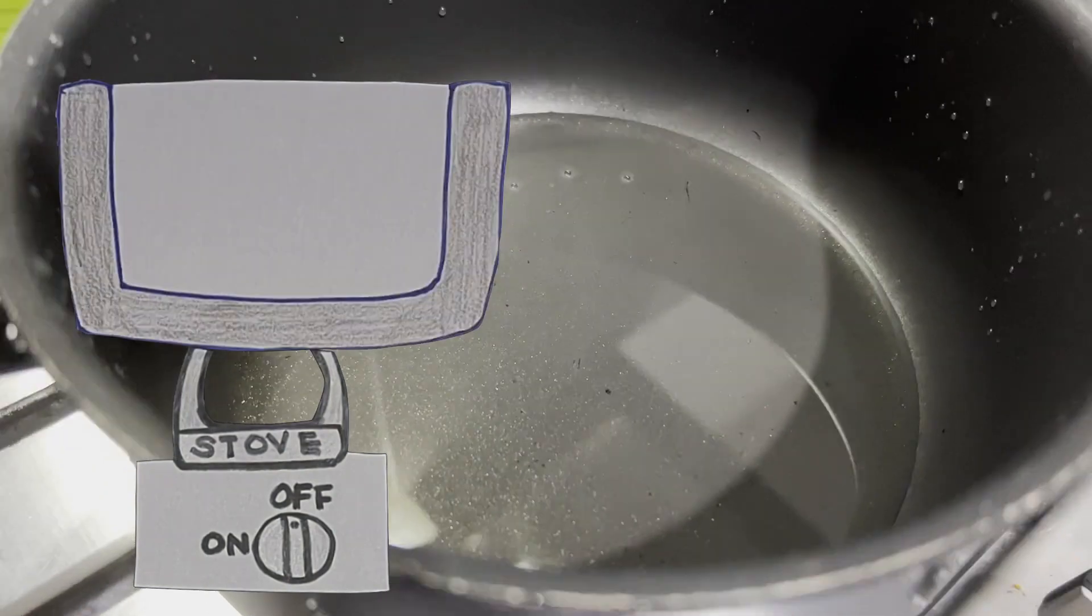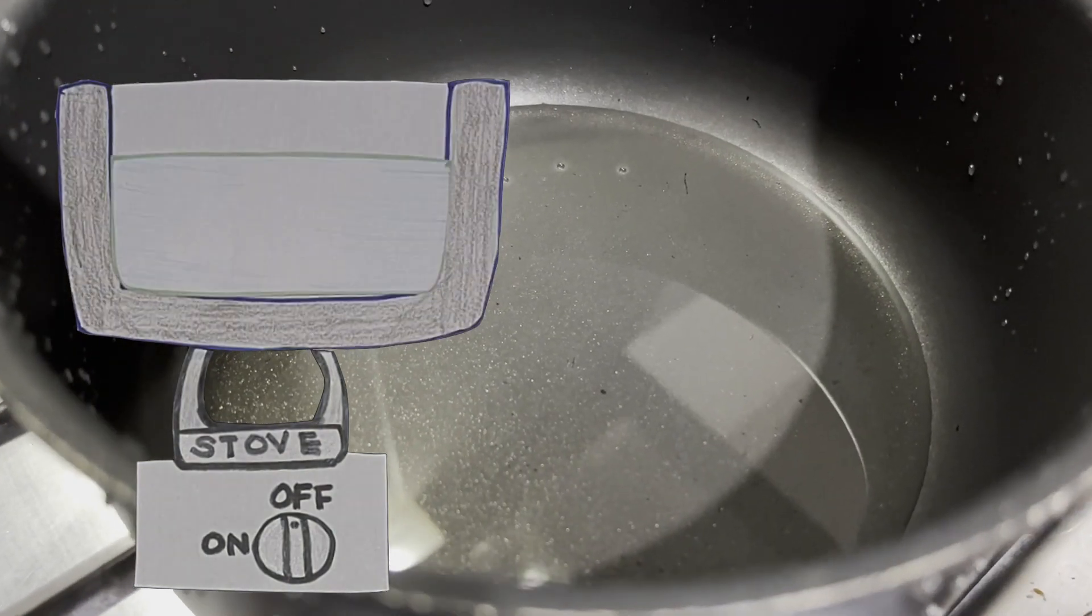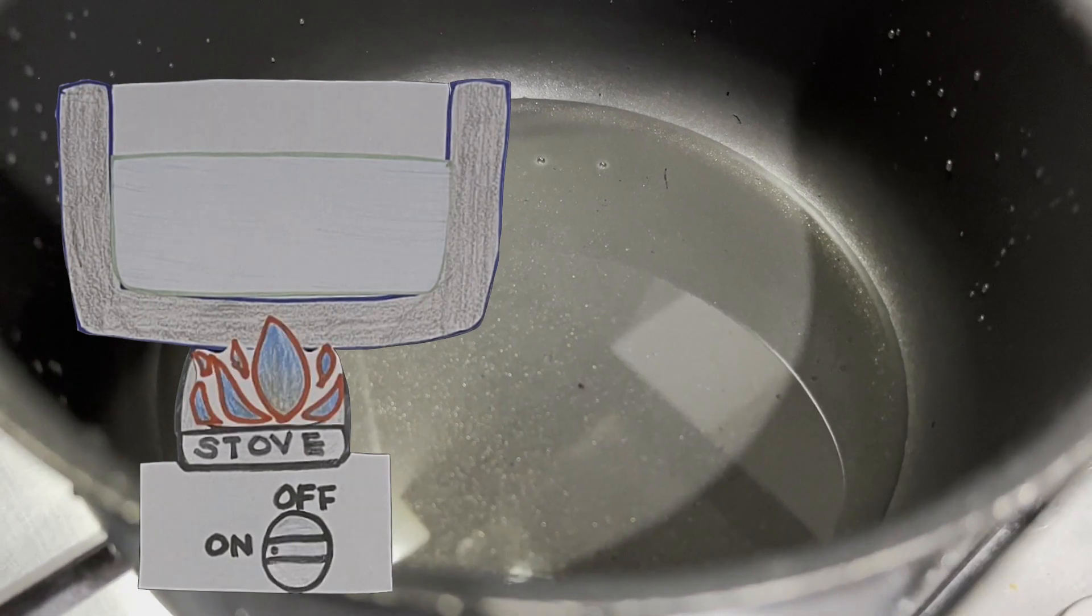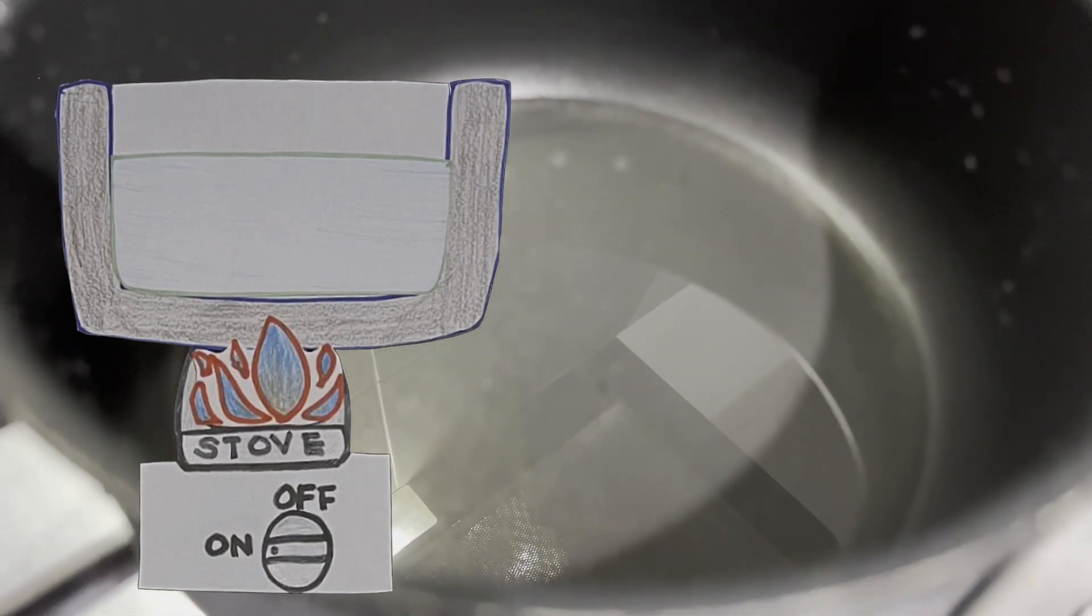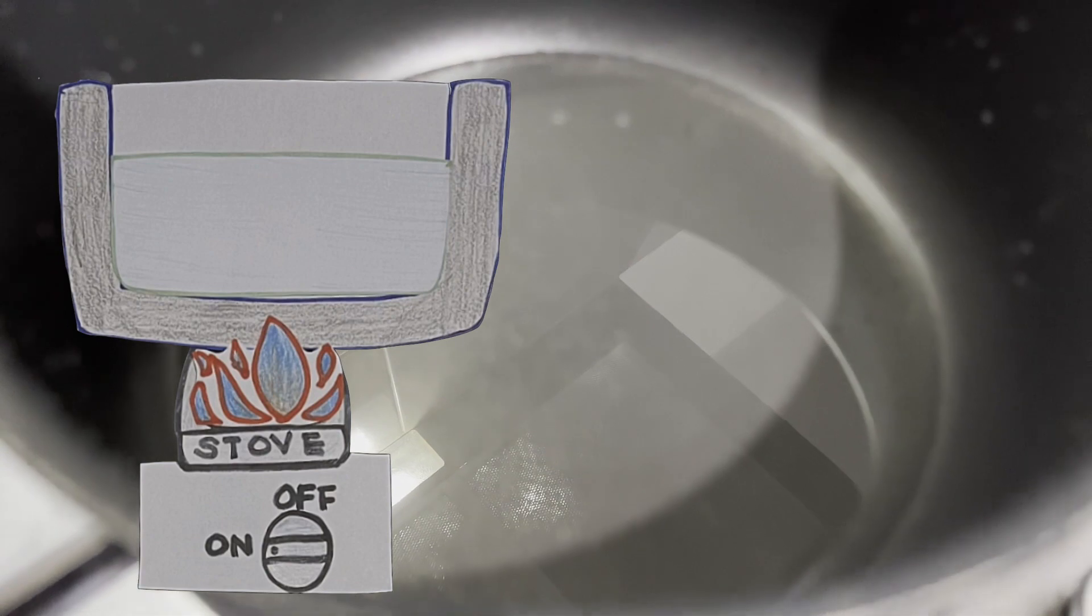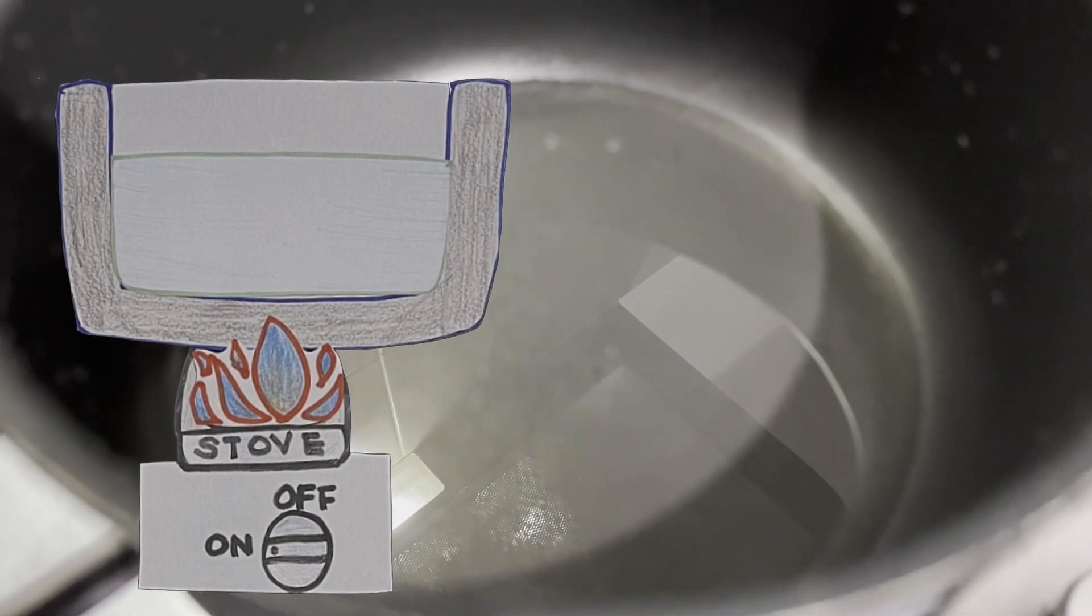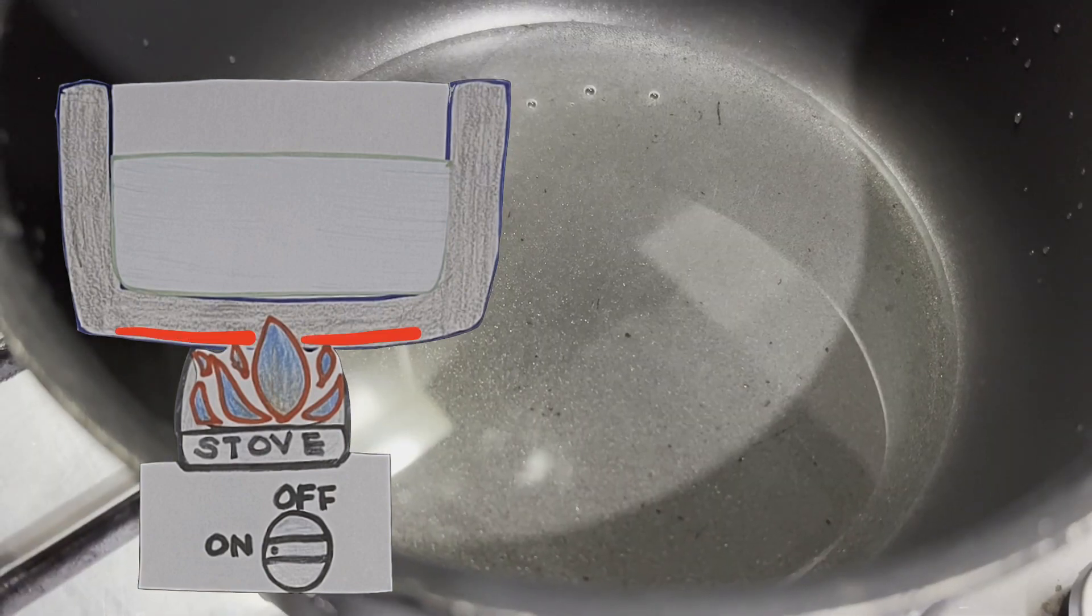What happens to the water in the pot when we switch on the stove? The stove is now a heat source and heat is supplied by the stove. The pot on the stove will gain heat from this heat source.